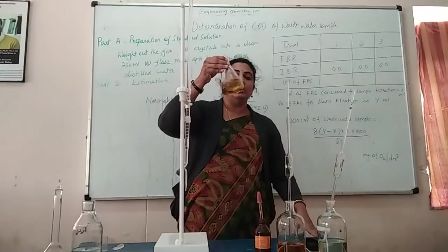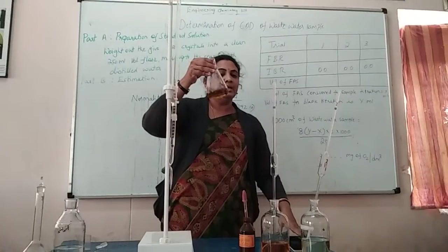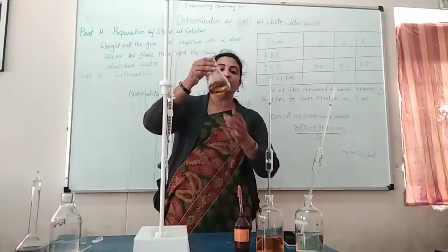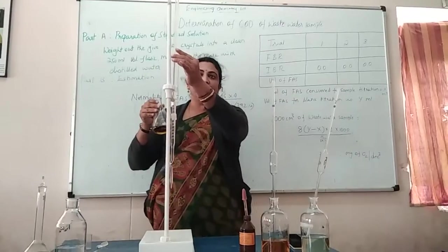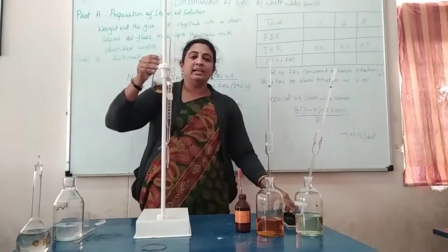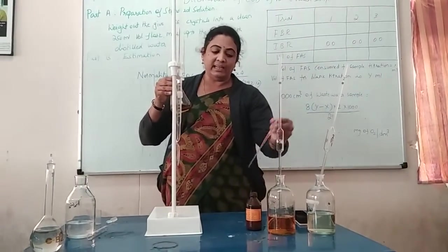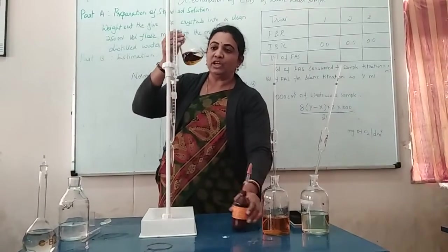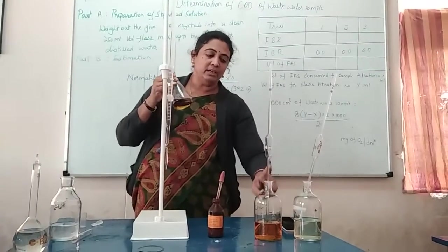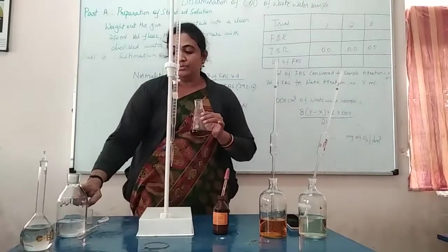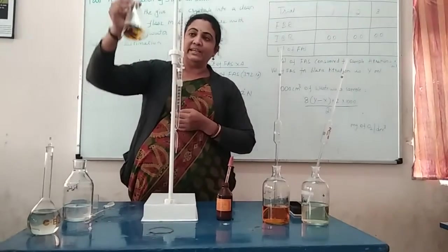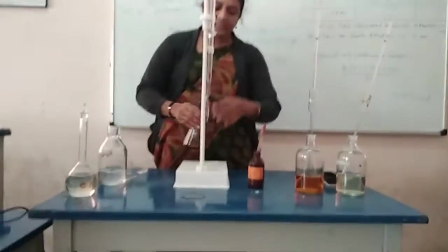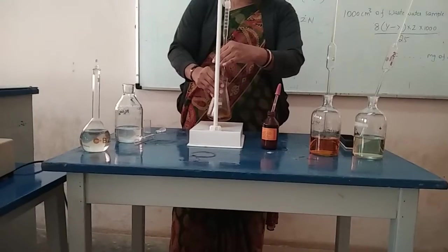Now you will get an initial color like this — it is called a dirty green or bluish-green color. Now we have to titrate against the standard FAS solution taken in the burette until we get a reddish-brown color, almost similar to the indicator color. We have taken 25 ml of wastewater, 25 ml of potassium dichromate, one test tube of sulphuric acid containing silver sulfate and mercuric sulfate, and 6 drops of indicator.